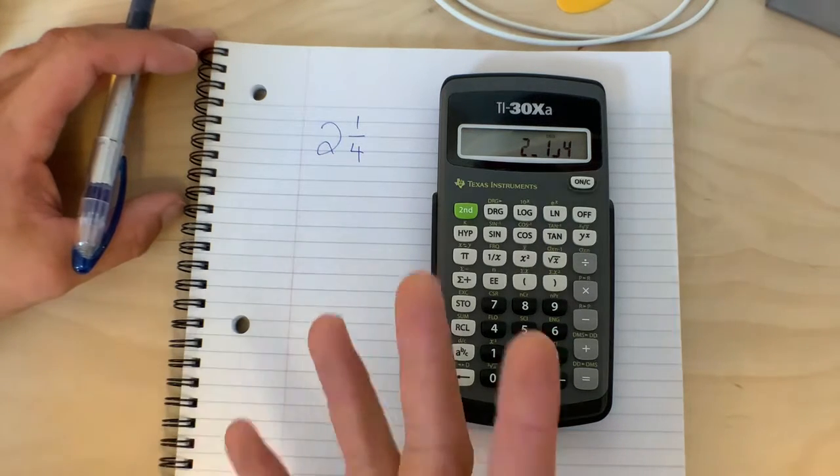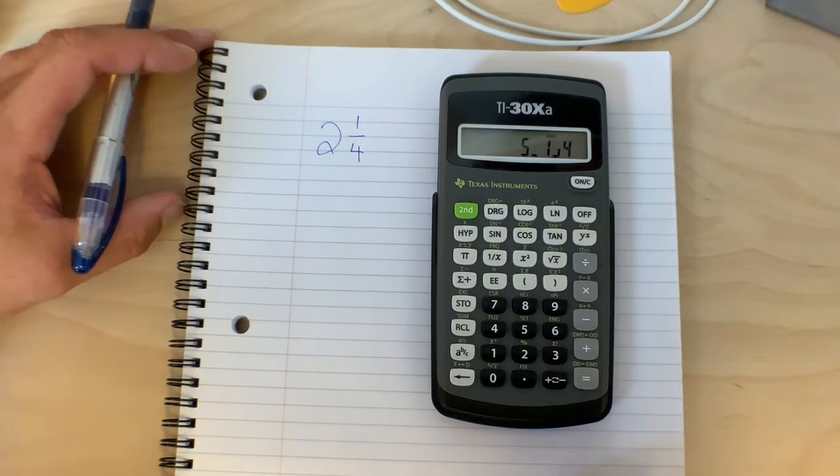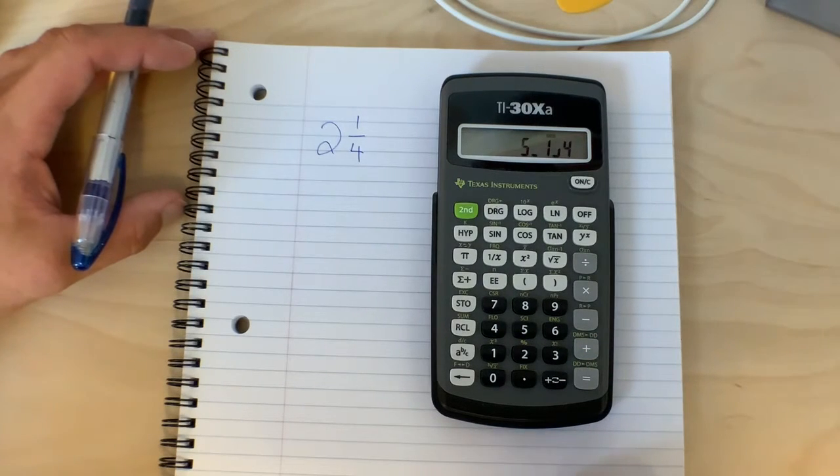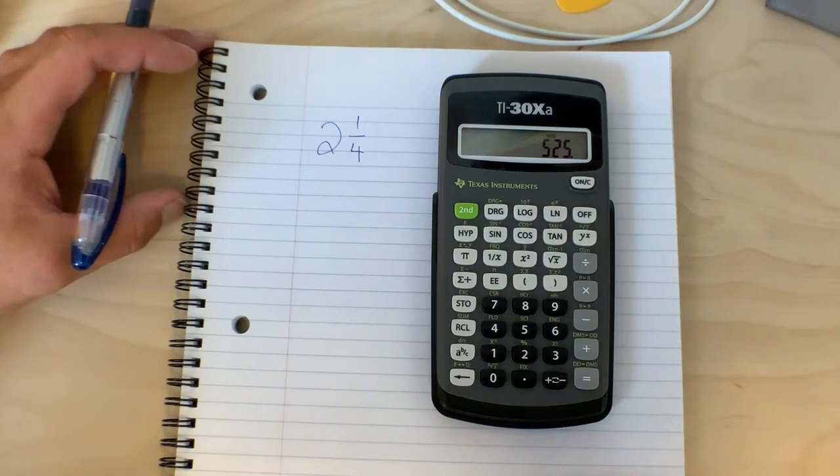So you can see there that two and one quarter is now into the calculator, and from here we can do anything we want with it. We can add three to give us five and one quarter, we can multiply it by a hundred to give us five hundred and twenty-five.